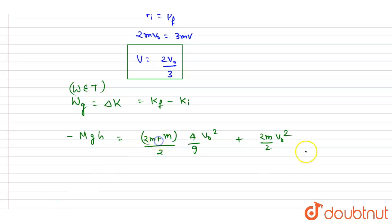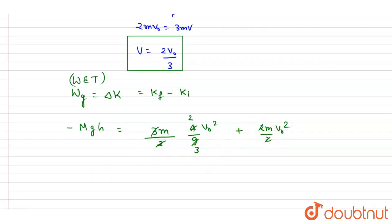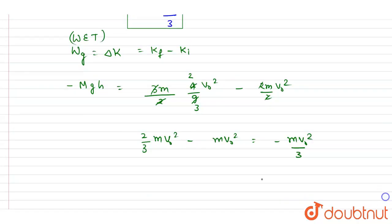And this will get cancelled out by 3. And we will write down, so here it will be minus sign, minus initial. So it will be 2 by 3 m v0 square minus m v0 square. So it will be minus m v0 square by 3. And it equals